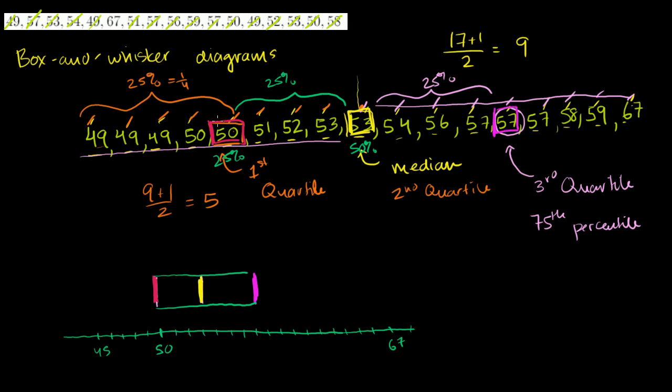The box is telling us that 50% of the values are between 50 and 57. And then we draw our whiskers to show the entire range of the values. So the highest value here is 67. So we draw a whisker that goes all the way to 67. And then the lowest value here is 49. So we draw a whisker that goes to 49.